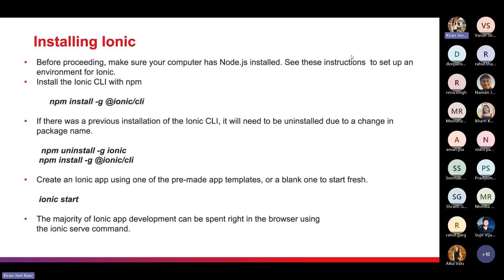Moving on to installing Ionic: there are two prerequisites — you must have Node.js installed and NPM installed. To install the Ionic CLI, use the command: npm install -g @ionic/cli. If you have a previous version of the Ionic CLI installed, you need to uninstall it first because the package name has changed: npm uninstall ionic, then reinstall via npm install -g @ionic/cli.